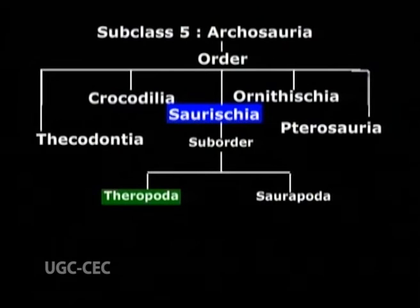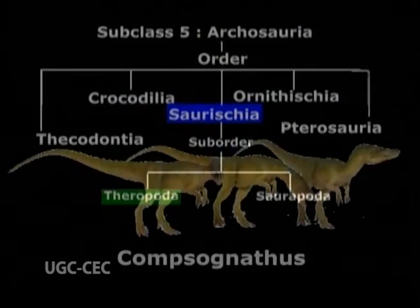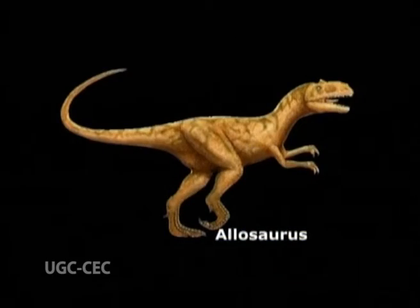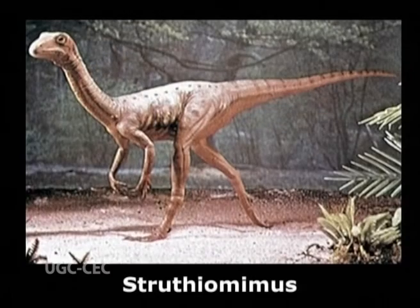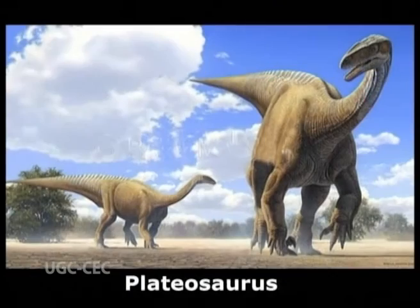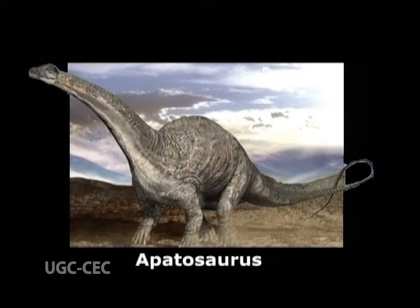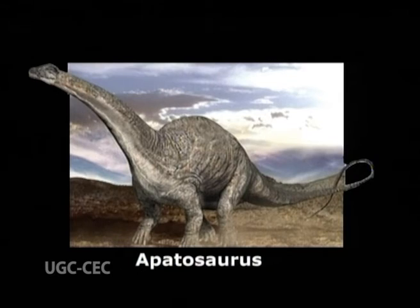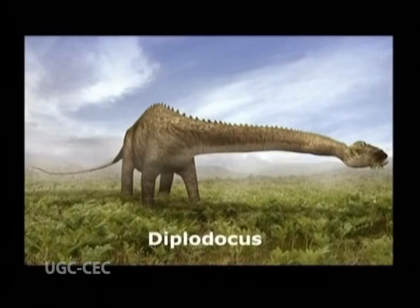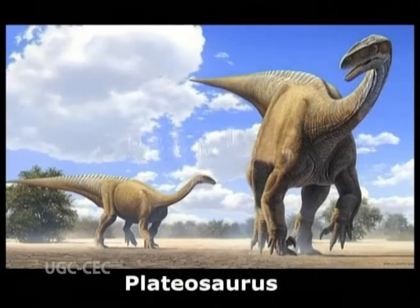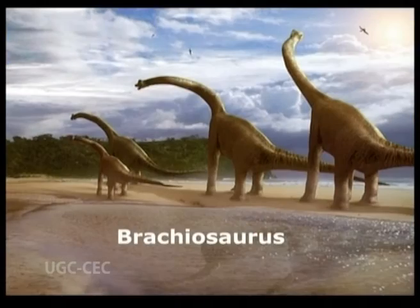Suborder 1, Theropoda. Examples are Compsognathus, Ornitholestes, Allosaurus, Tyrannosaurus, Struthiomimus, and Plateosaurus. Suborder 2, Sauropoda. Examples are Apatosaurus, Brontosaurus, Diplodocus, Elasaurus, Plateosaurus, and Brachiosaurus.